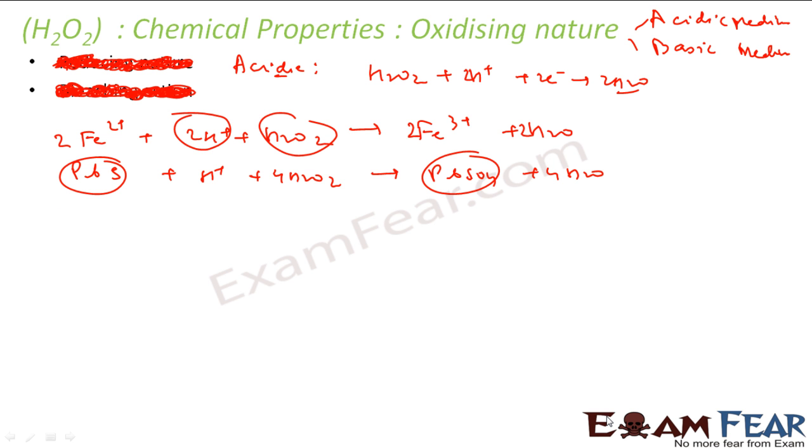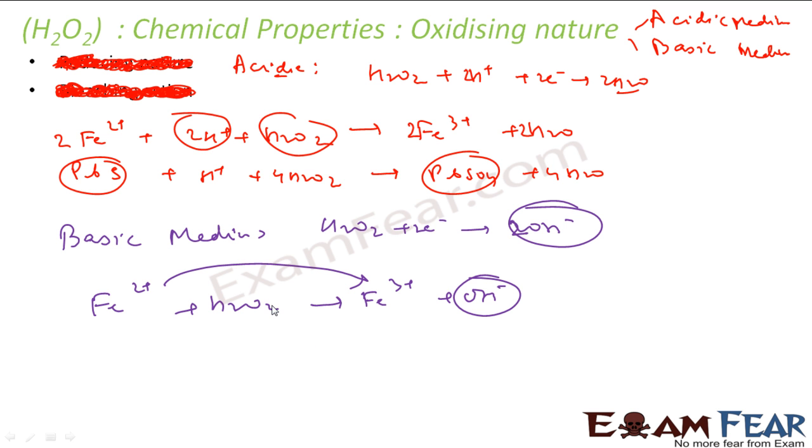In basic medium, H2O2 takes electrons to give 2OH-. Same iron, you have H2O2, it gives Fe3+ plus OH- in basic medium, it gets oxidized. Mn2+ when you react with H2O2 gives Mn4+ plus OH-, that means it is basic. This also gets oxidized. So it has oxidizing nature in both acidic and basic medium.